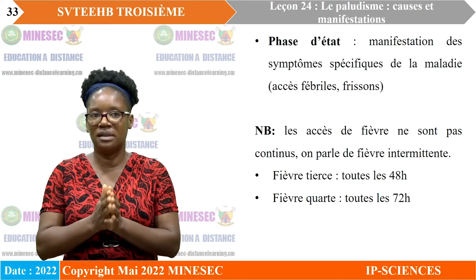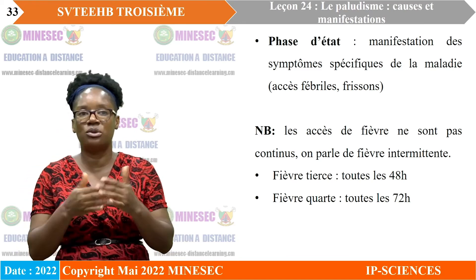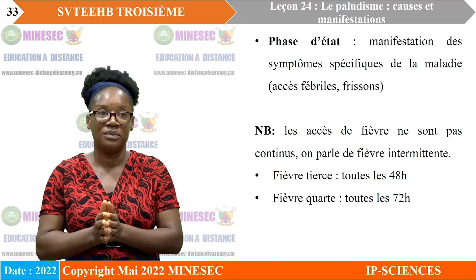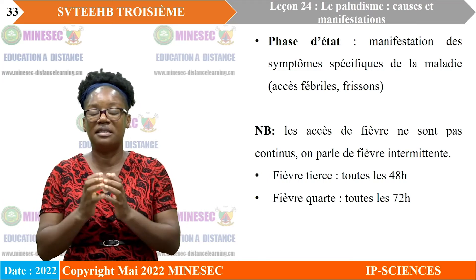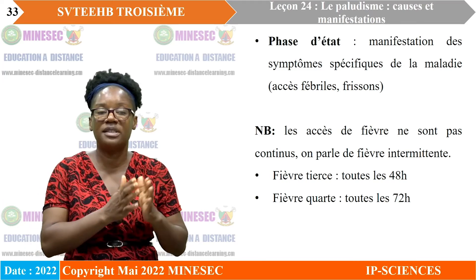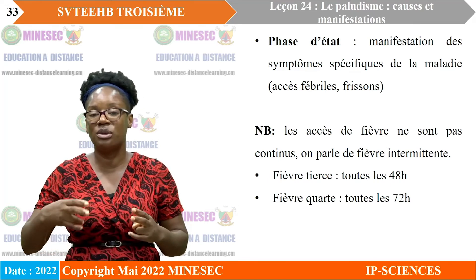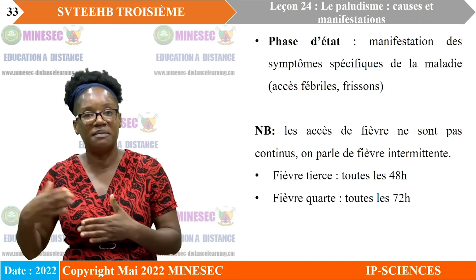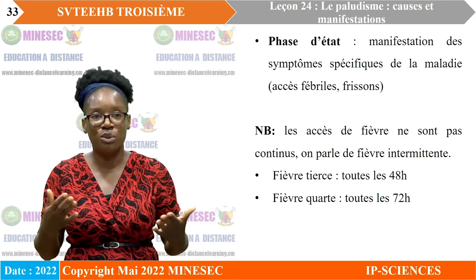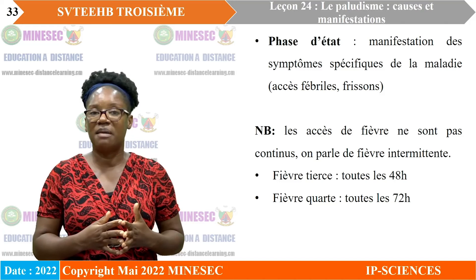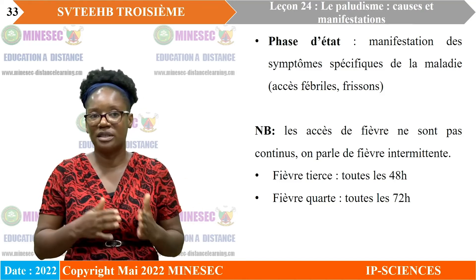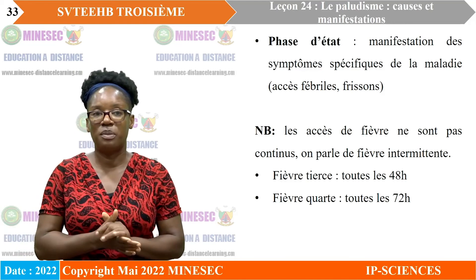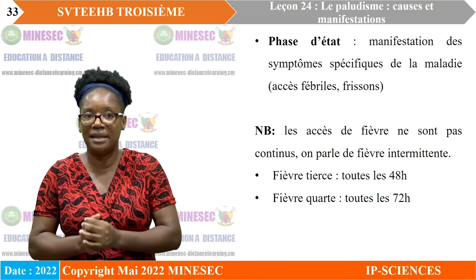Les accès de fièvre ne sont pas continus : on parle donc de fièvre intermittente. Cette fièvre intermittente sera appelée fièvre tierce lorsqu'elle se produit toutes les 48 heures, comme dans le cas du paludisme à plasmodium falciparum qu'on rencontre beaucoup au Cameroun. Elle peut également être appelée fièvre quarte lorsqu'elle se produit toutes les 72 heures, dans le cas du paludisme à plasmodium malariae.